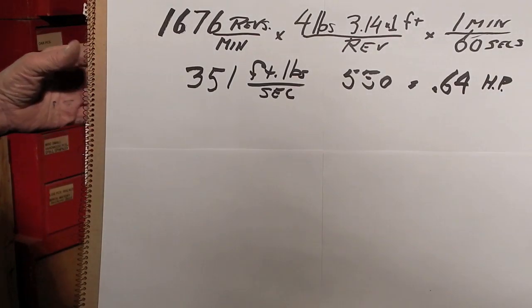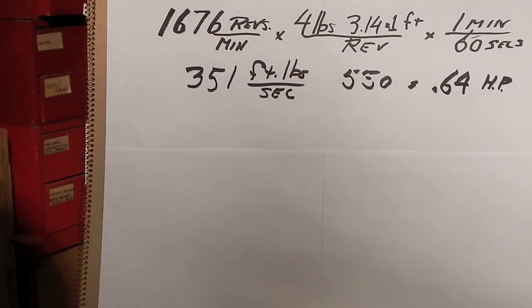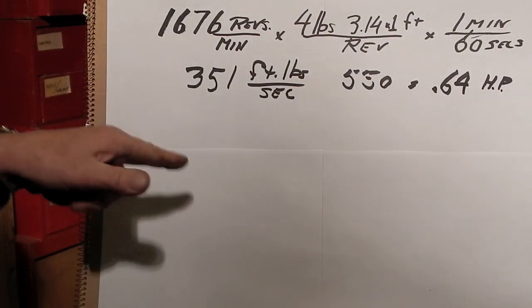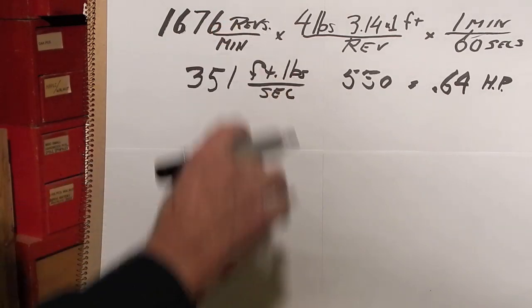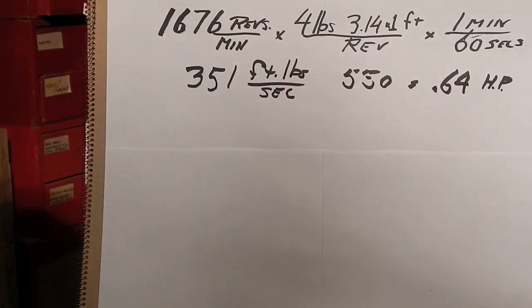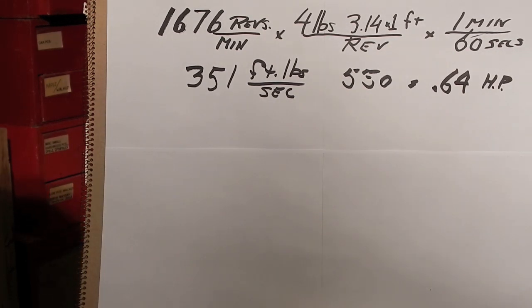0.64, almost two-thirds of a horsepower. Not bad for an old half-horsepower motor. I thought it might come up a little bit higher. I'm sure if we operated at this load for any length of time, the overload protection would trip and shut the motor down. So I suspect that a half-horsepower rating for this motor is a pretty honest rating, and I think the motor will be quite satisfactory for my belt disc sander project.